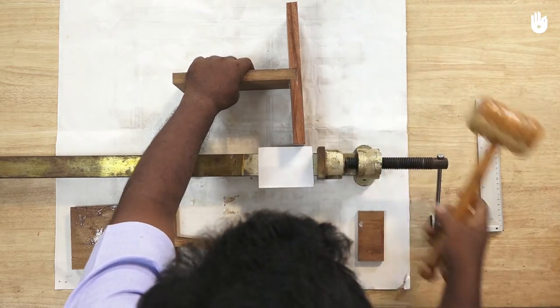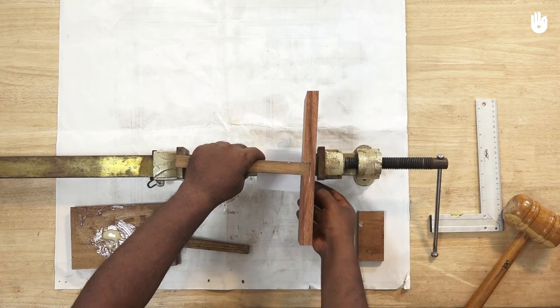Use the mallet to assemble the pieces together and place it between the jaws of a T-bar clamp.